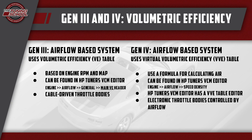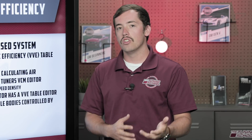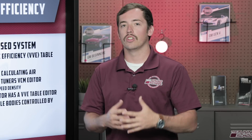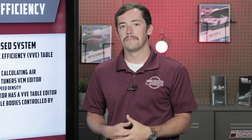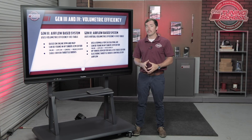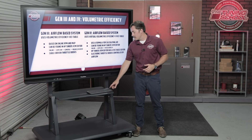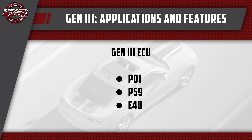The last distinctive feature of the Gen 4 ECU is that it's all electronic throttle. They've moved completely away from cable-driven throttle — we're now fully on electronic throttle bodies. That's going to change the way you actually control the idle settings with the computer. So now that you know a little bit about what makes the computers different as far as Gen 3 and Gen 4 are concerned, let's talk about applications.